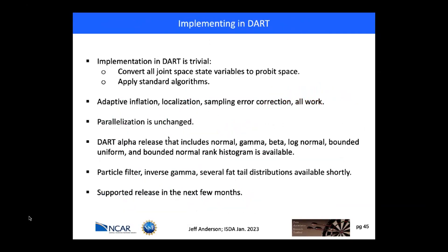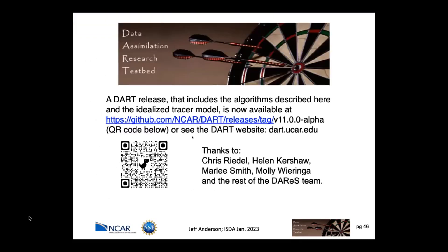The implementation in DART is absolutely trivial. Basically there's a single conversion of all joint-space state variables — the state variables and the prior of the observed variables — to the probit space, and then literally the original DART code continues to be used. Our adaptive inflation algorithms, localization, sampling error correction — all work as is, and the parallelization is unchanged. There is a DART alpha release that includes a number of distribution examples: normal, gamma, beta, log normal, bounded uniform, and the bounded normal rank histogram. In the near future we'll also have particle filter, inverse gamma, and fat tail distributions available. This release is not yet fully supported and may be slow, but it is available — you can find a link and a QR code taking you directly to the release, as well as information on the main DART webpage.